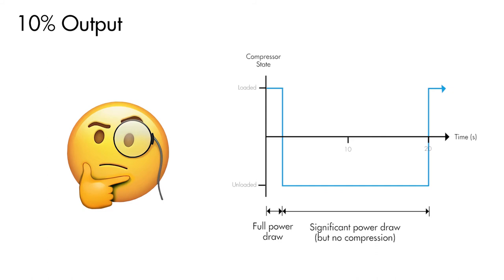Basically, any reduction in energy the digital scroll sees during part load scenarios is not proportional to its reduction in capacity output and this means that efficiency is being compromised.